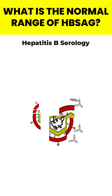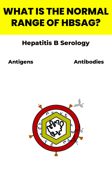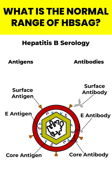Hepatitis B surface antibodies are produced by the body's immune system in response to HBSAG. Hepatitis B surface antibodies in the blood indicate protection against hepatitis B virus infection.